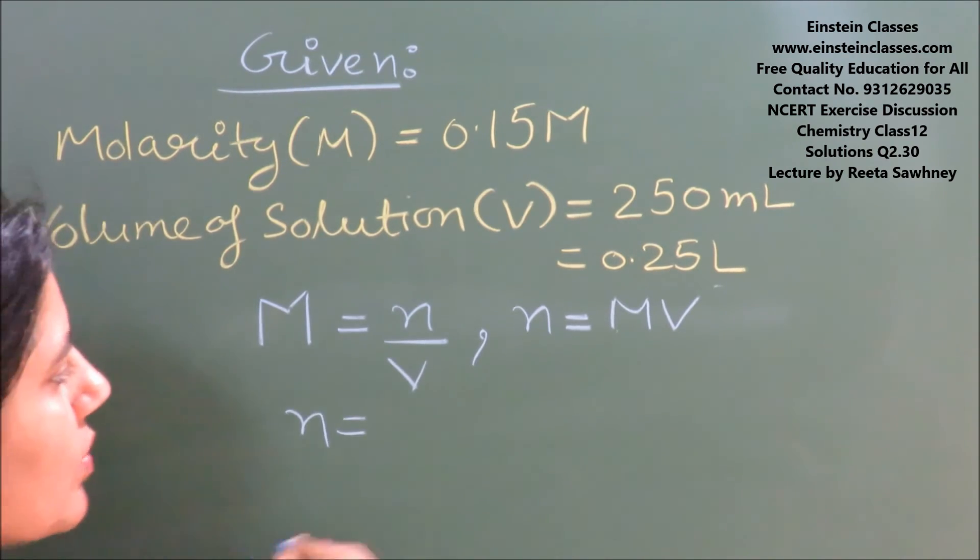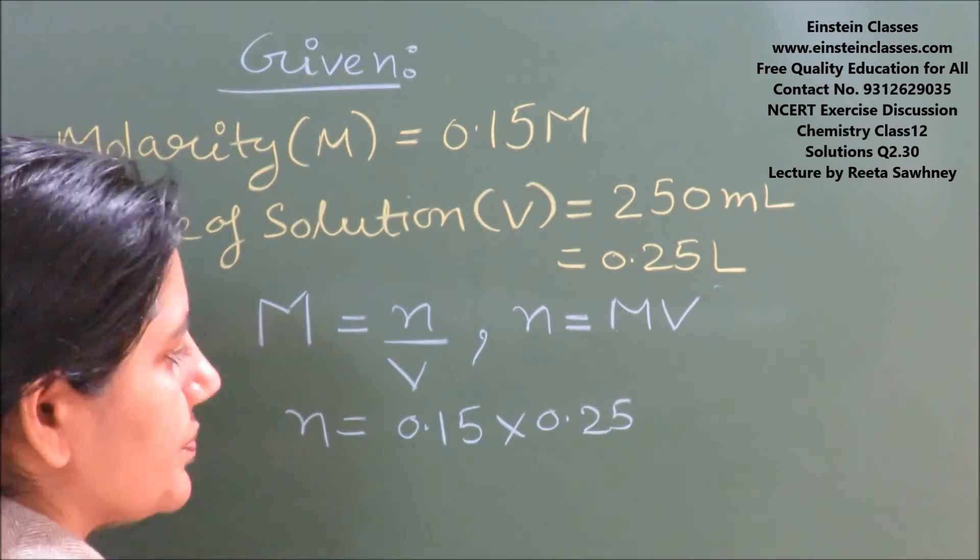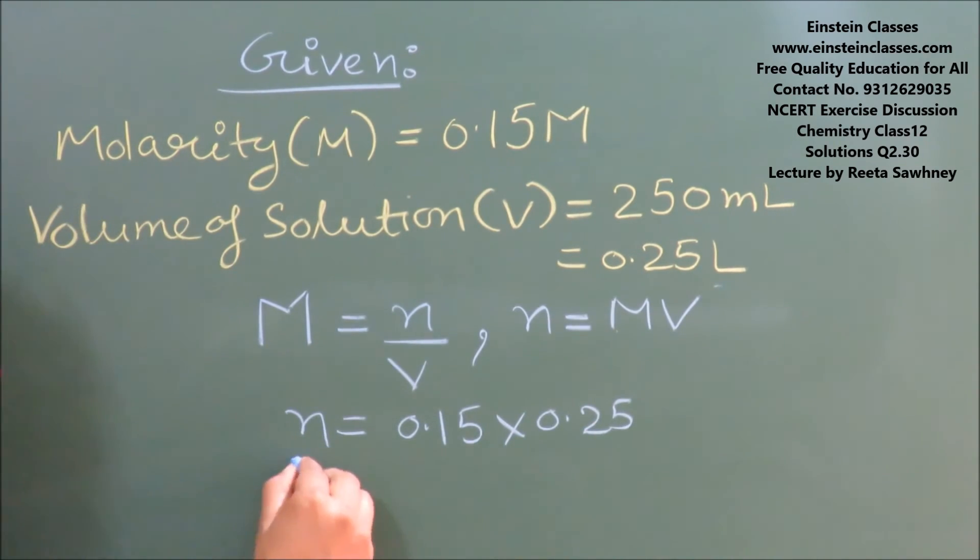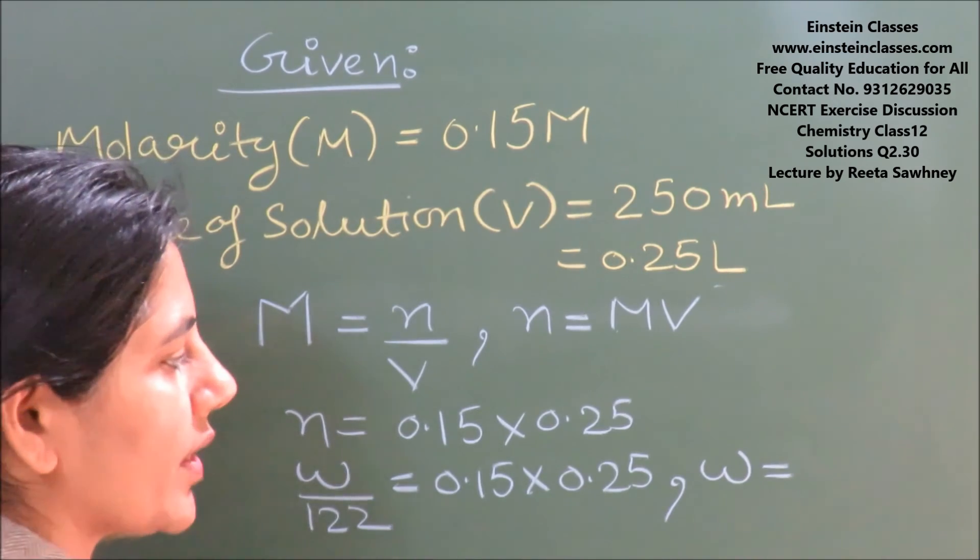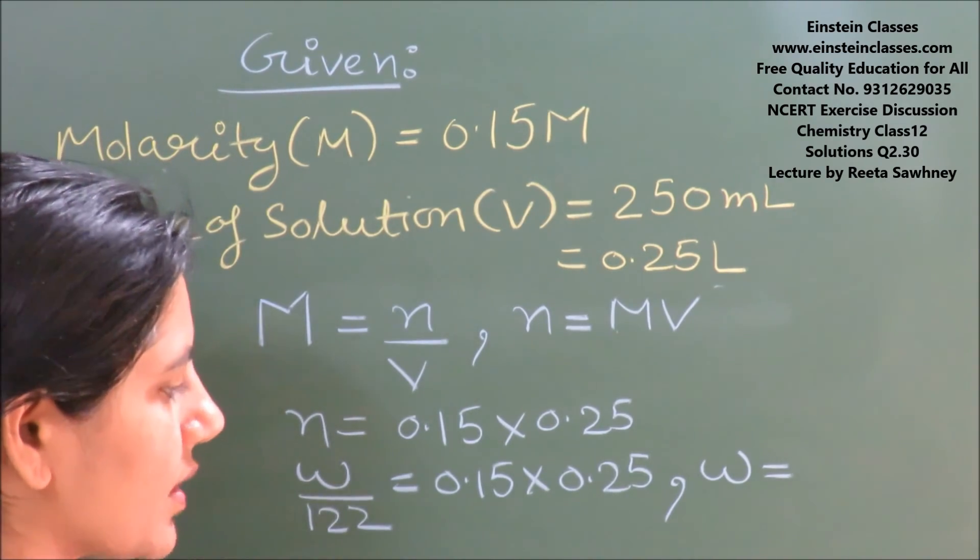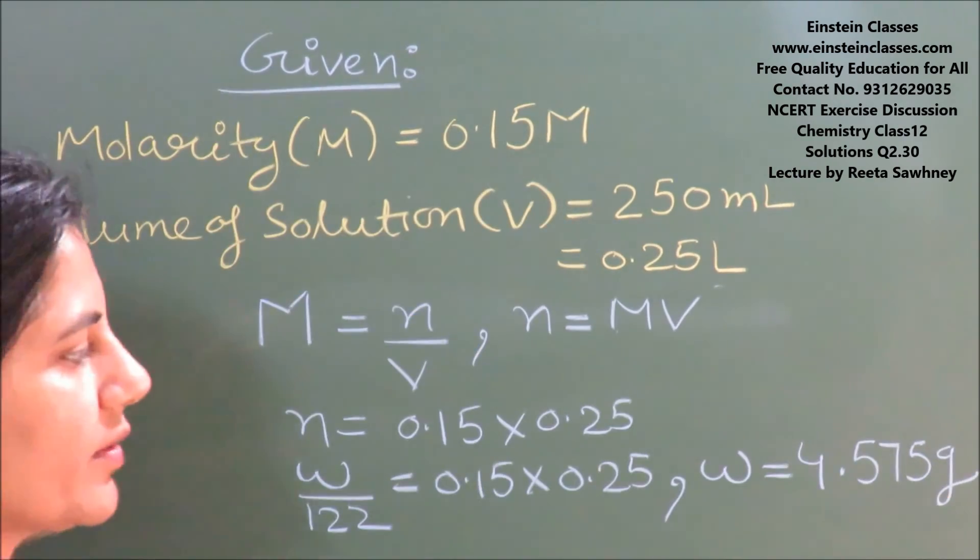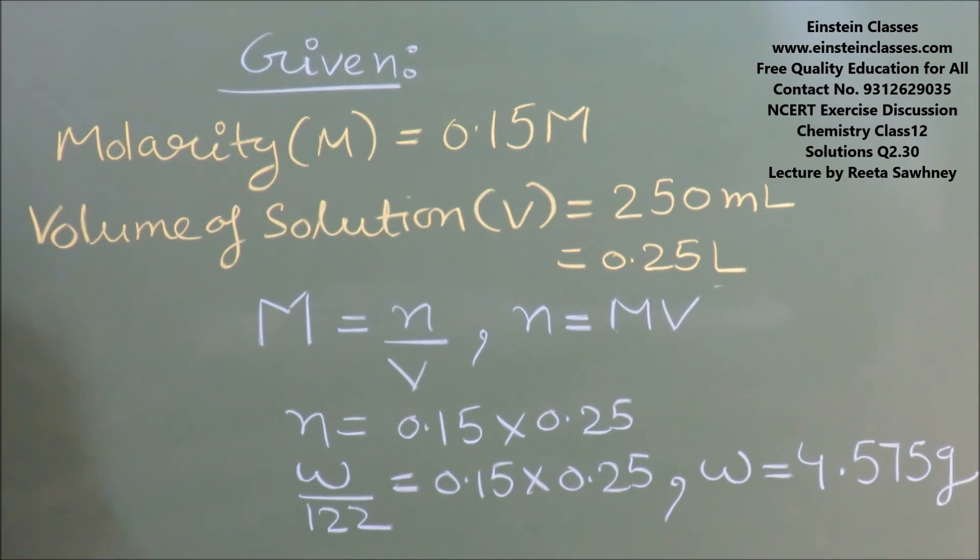Firstly, we will calculate the moles of solute. Number of moles is written as given mass by the molar mass, and the molar mass for benzoic acid is 122. Using this we will find that mass of benzoic acid comes out to be... So, this is the mass of the benzoic acid.